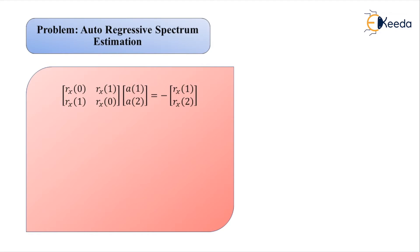The normal equation uses a 2×2 autocorrelation matrix with first row [rx(0), rx(1)] and second row [rx(1), rx(0)], which is the matrix R_xx. This is multiplied by a column matrix of coefficients [a(1), a(2)], and equals the negative of the column matrix [rx(1), rx(2)].